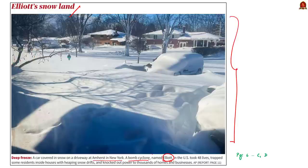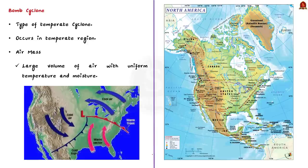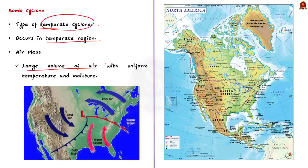First of all, you have to know that bomb cyclones are associated with temperate cyclones. They mainly occur in the temperate region where the warm air mass meets with the cold air mass. What is an air mass? An air mass is a large volume of air with uniform temperature and moisture. When air stays over a surface for a long period of time, it gets the characteristics of the surface.